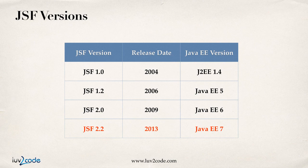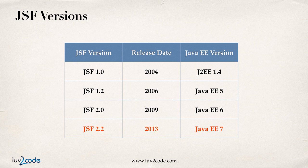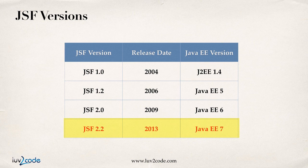Let's talk about the different versions of JSF. There are a lot of different versions floating out there, so if you Google for some JSF tutorials, you may find some outdated information. JSF has been around for a long time: JSF 1.0 was released in 2004, JSF 1.2 came out in 2006, JSF 2.0 came out in 2009 aligned with Java EE6, and most recently JSF 2.2 was released in 2013 as part of Java EE7. You want to make sure you're using at least JSF 2.2, because there were some significant changes between 2.2 and all the previous versions.